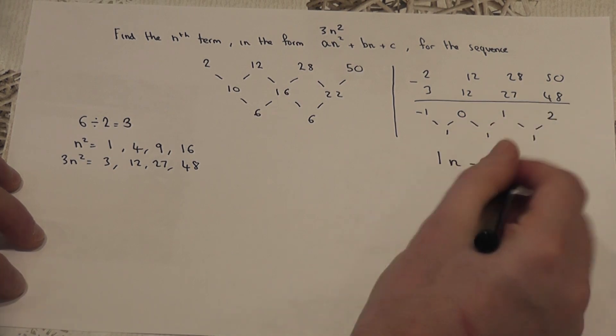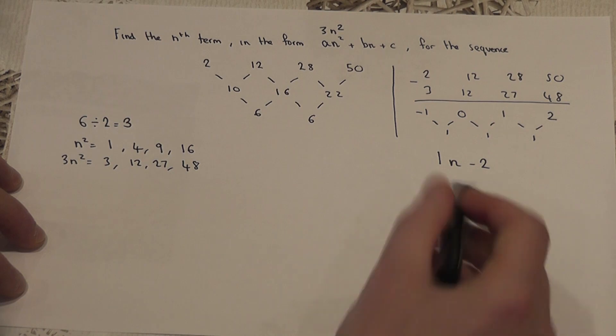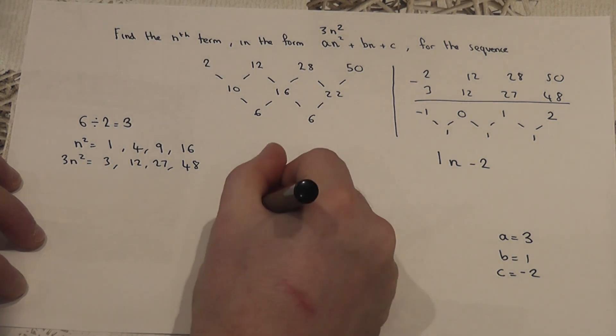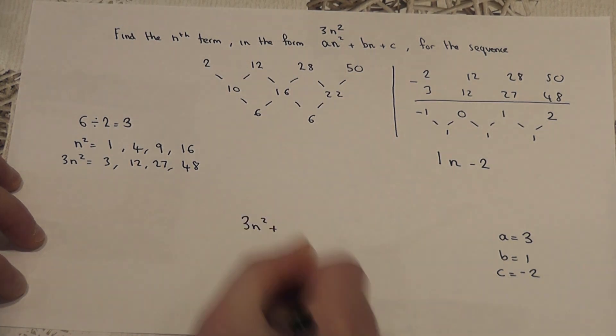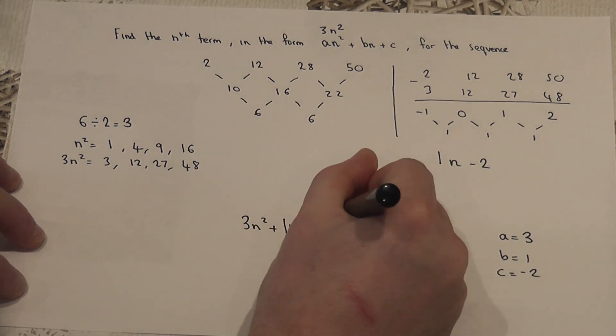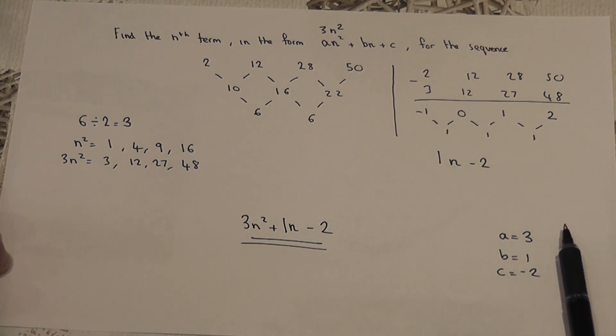So, this sequence generates the linear part of the sequence. So, in this case, a is 3, b is 1, and c is negative 2. And that sequence has the equation 3n squared plus 1n, take away 2.